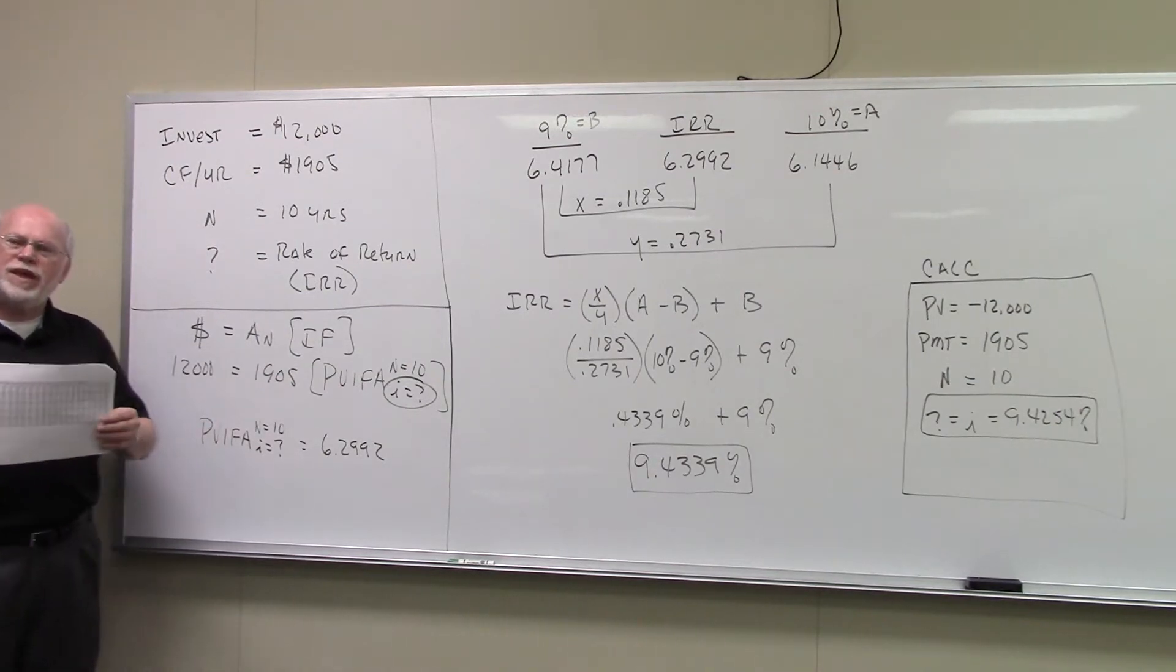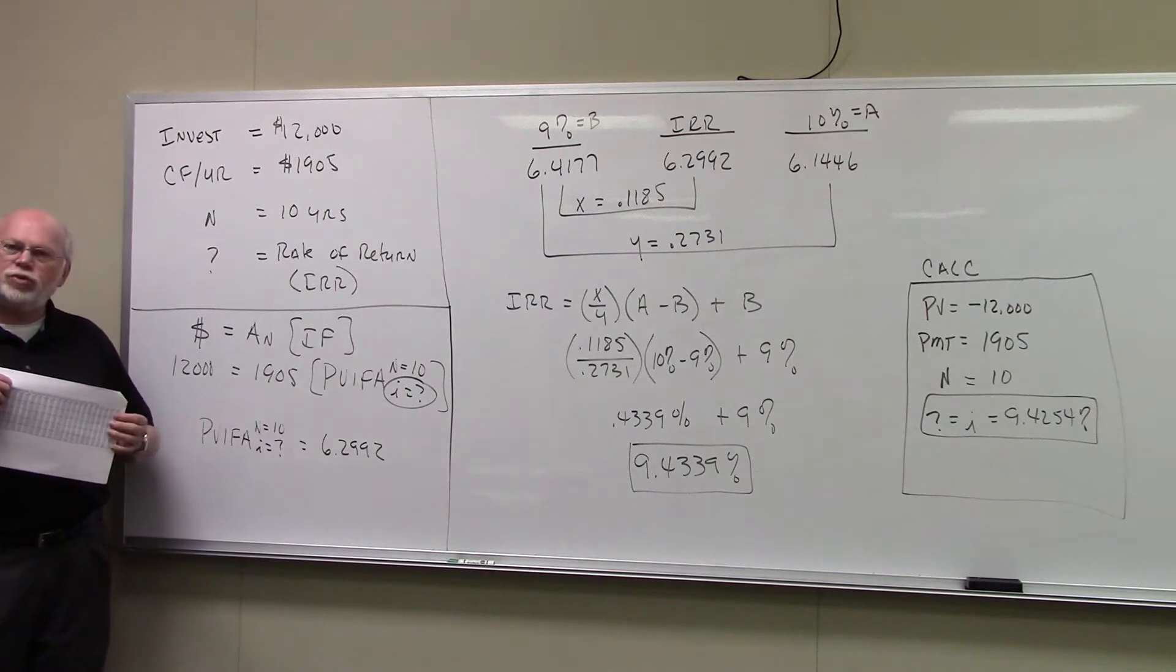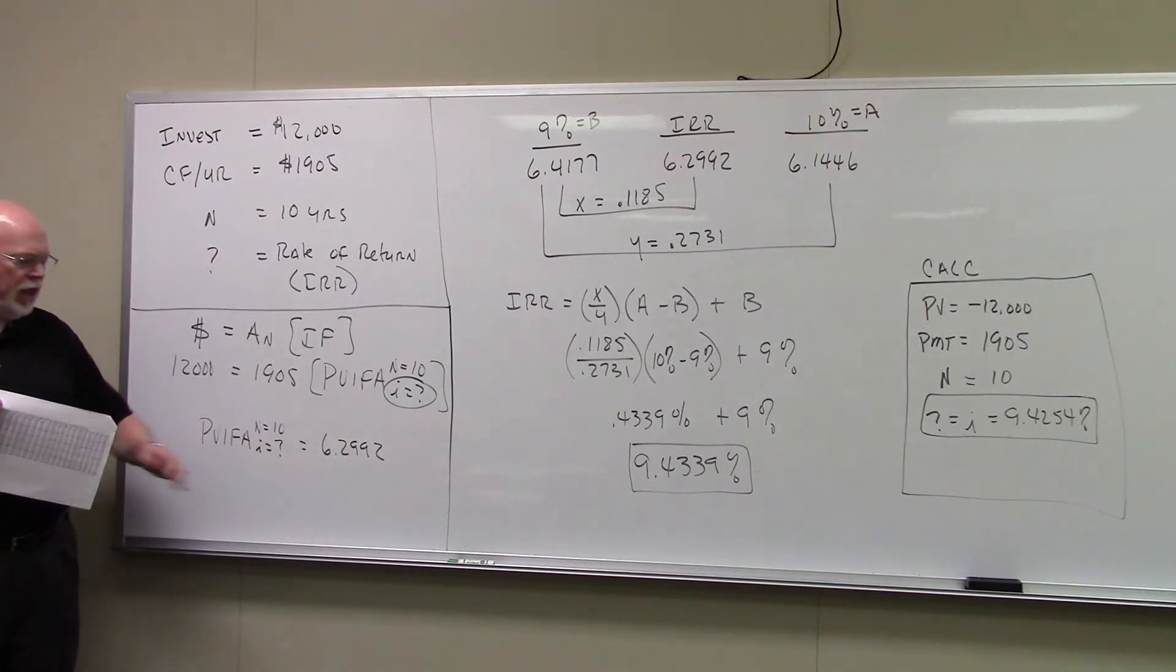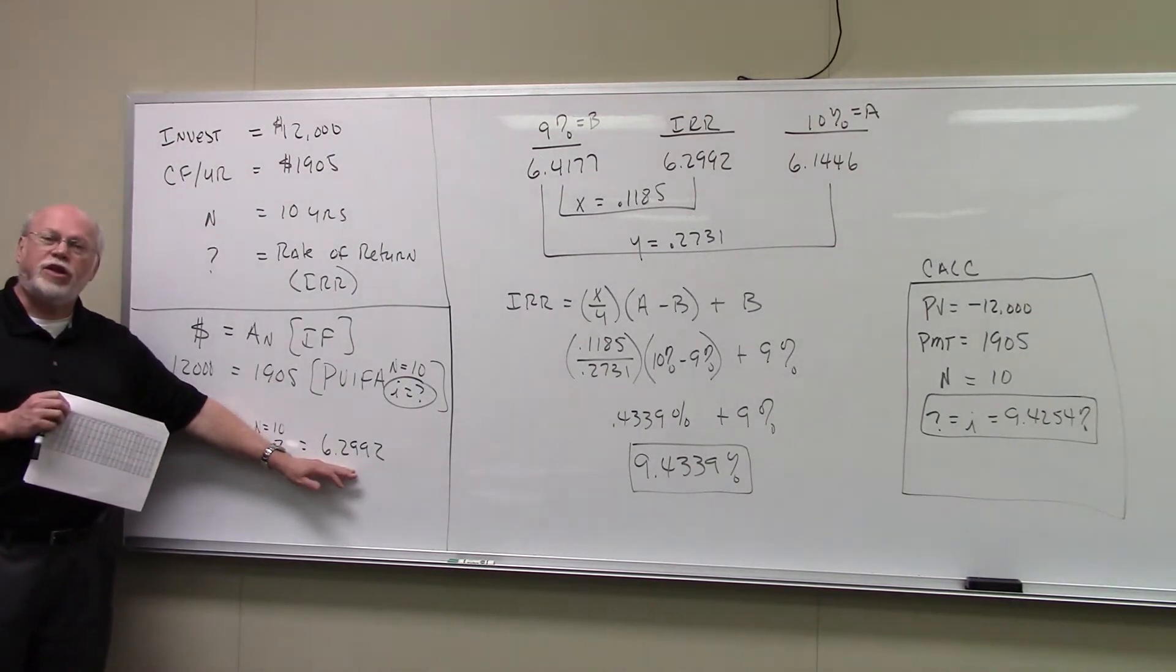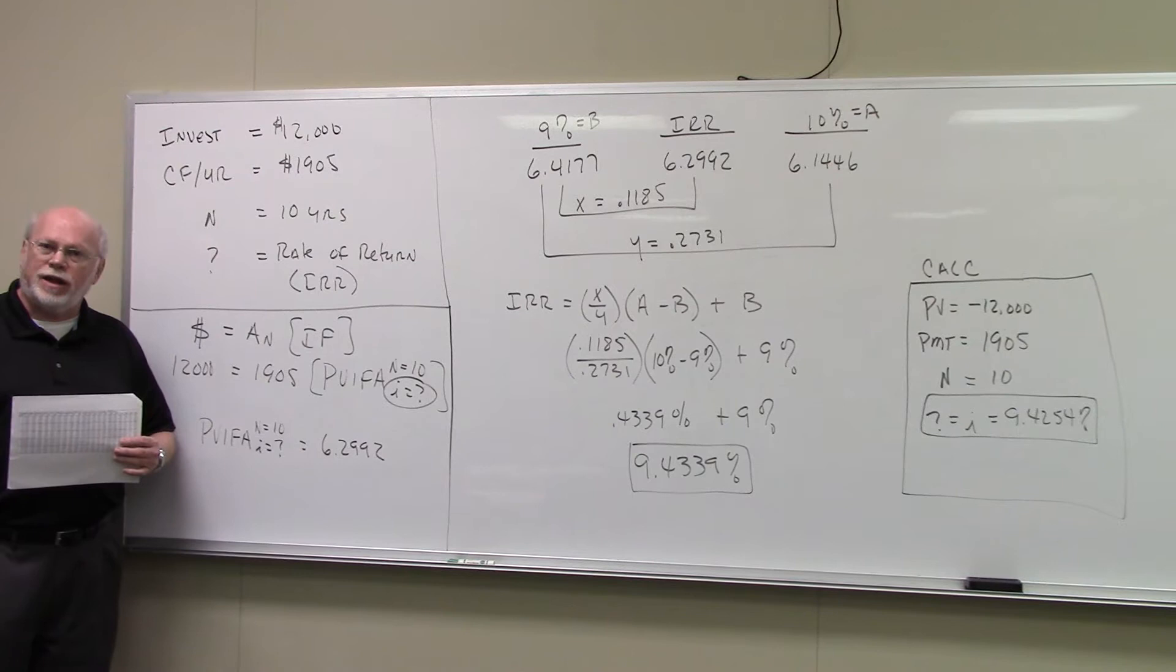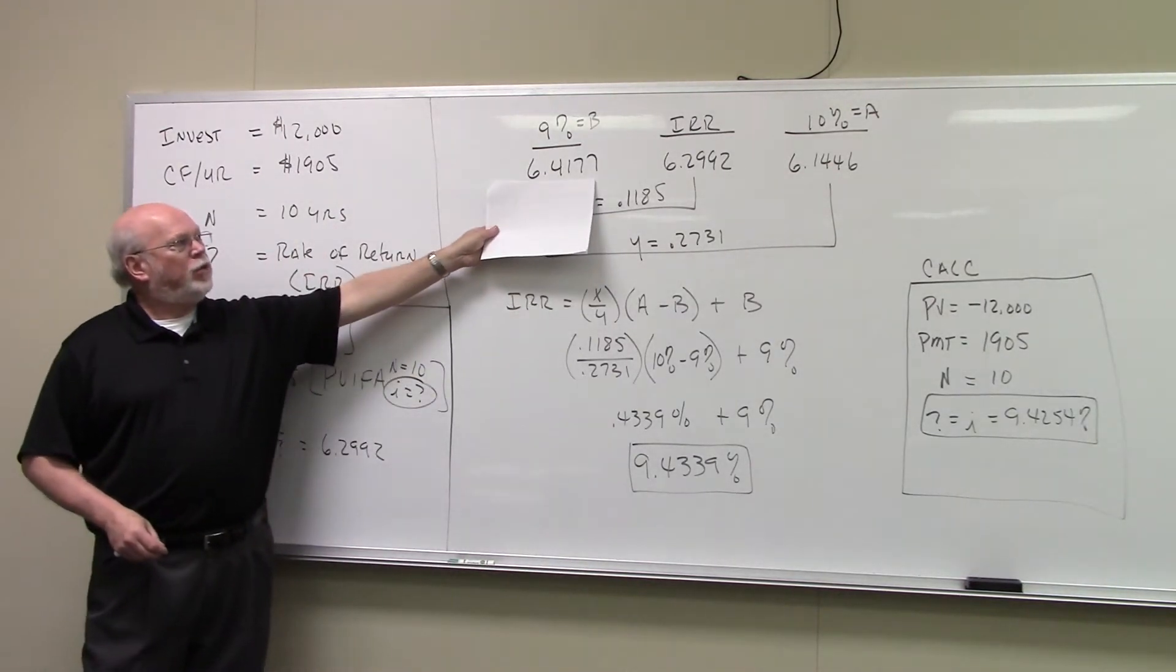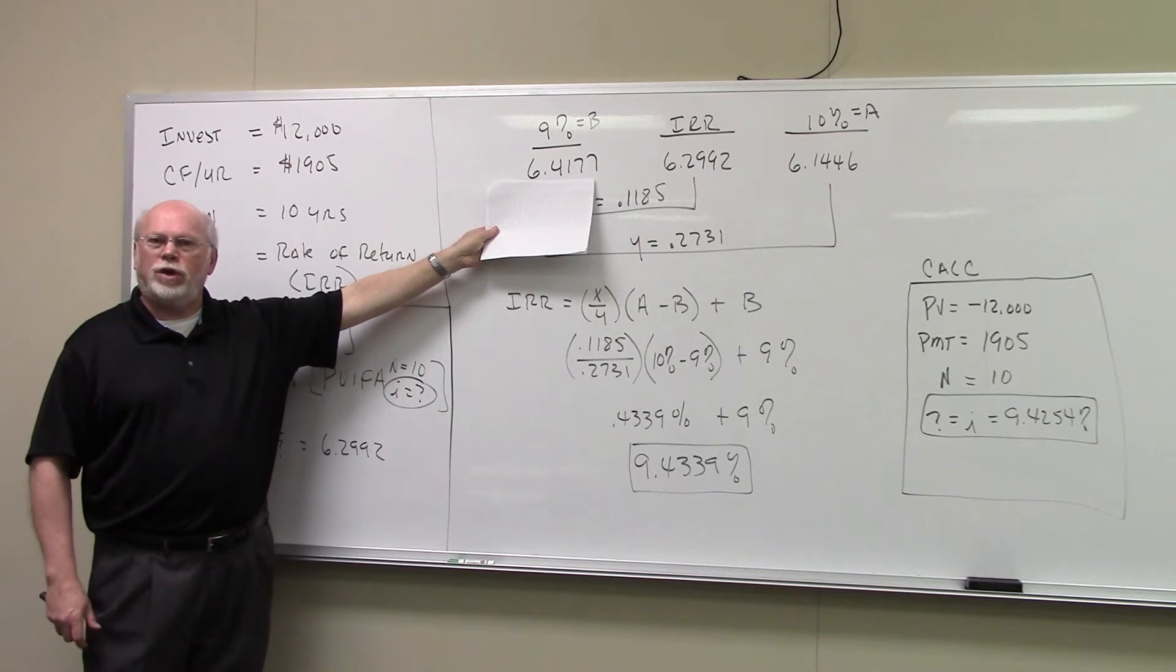If you go to your PVIFA table and you go down the left-hand column to find N equal to 10 and then go across to you find 6.2992. Well, long story short, you're not going to find that interest factor. But it's somewhere between the 9% and the 10% column. And indeed, in the 9% column, we found 6.4177.